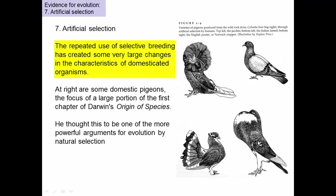The repeated use of selective breeding has created some very large changes in domesticated organisms. Here's the rock dove that's the ancestor of these fancy pigeon breeds. This one you can barely see its head, this one has a big tail, this one has a big puffed up chest. These are domesticated breeds of pigeons bred by British hobbyists. You can see how different they are than their ancestor.